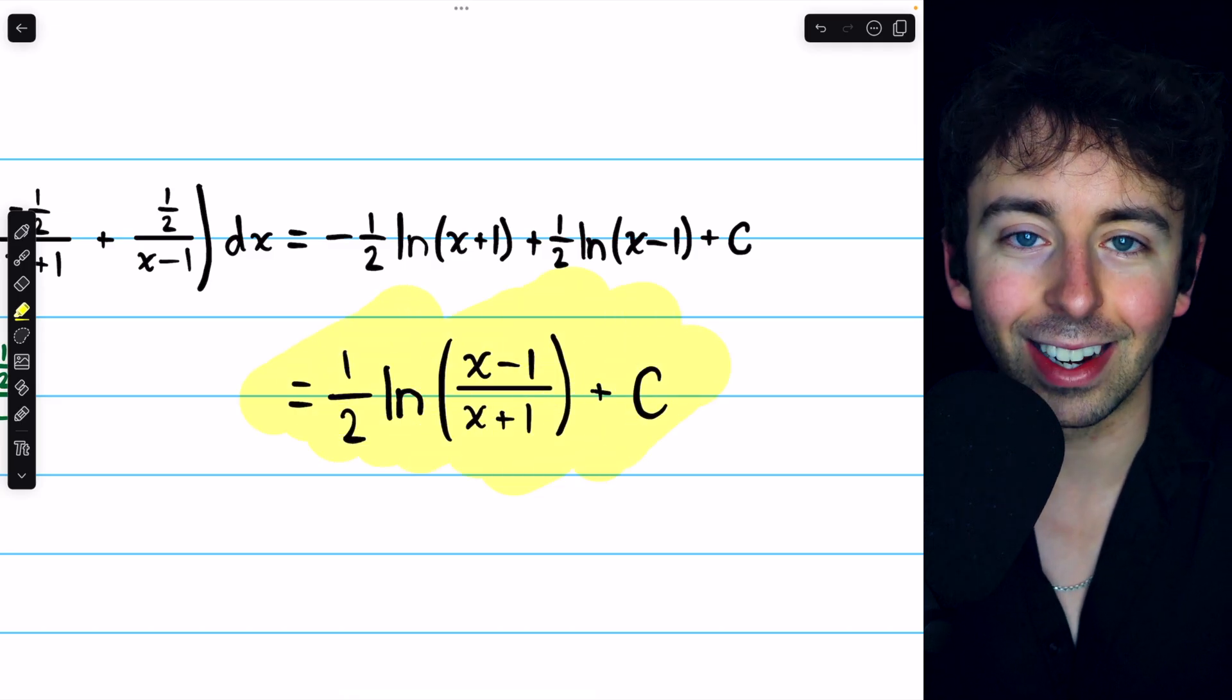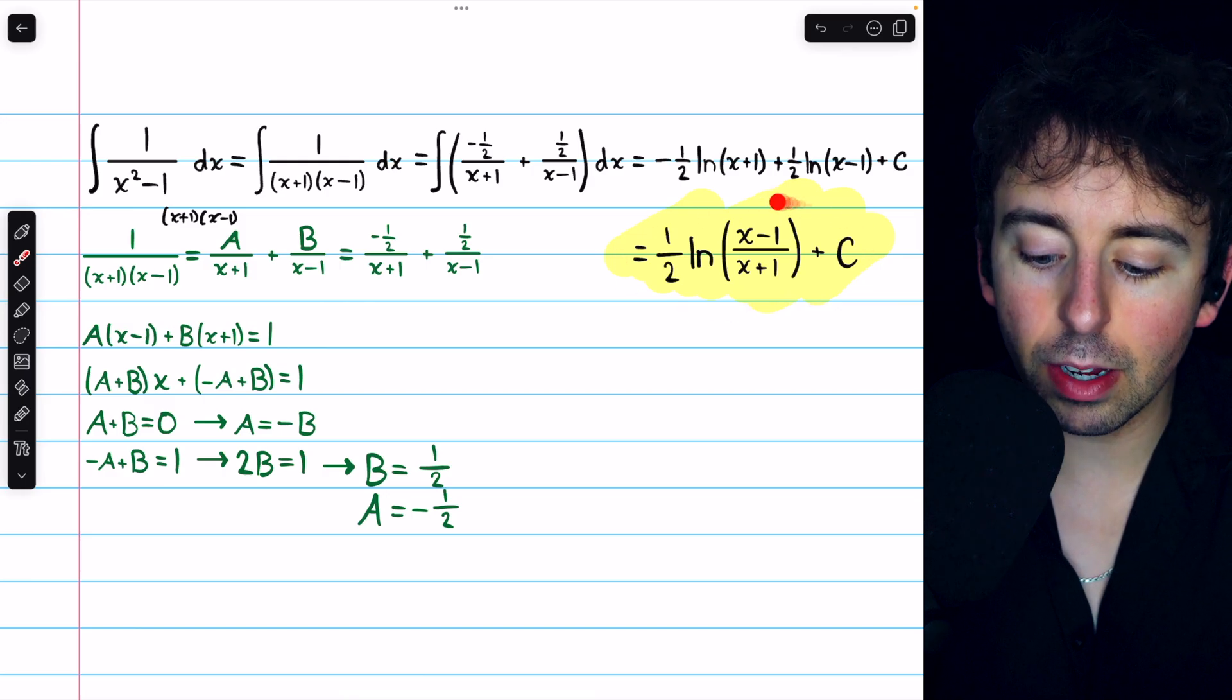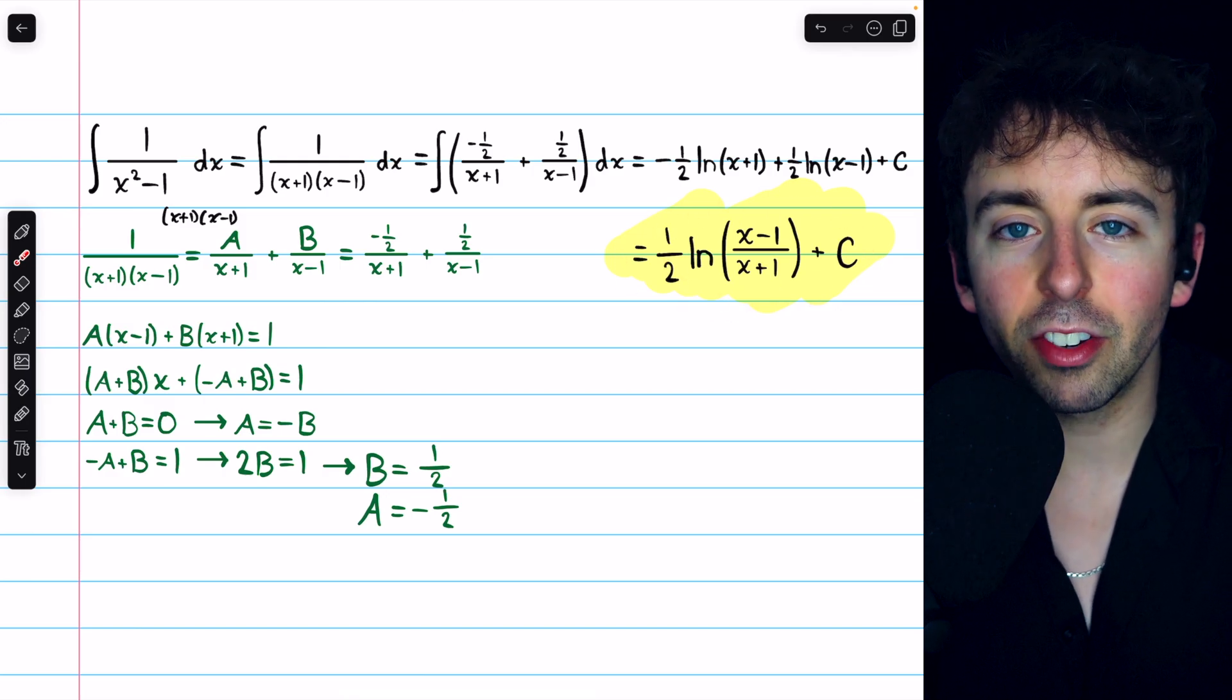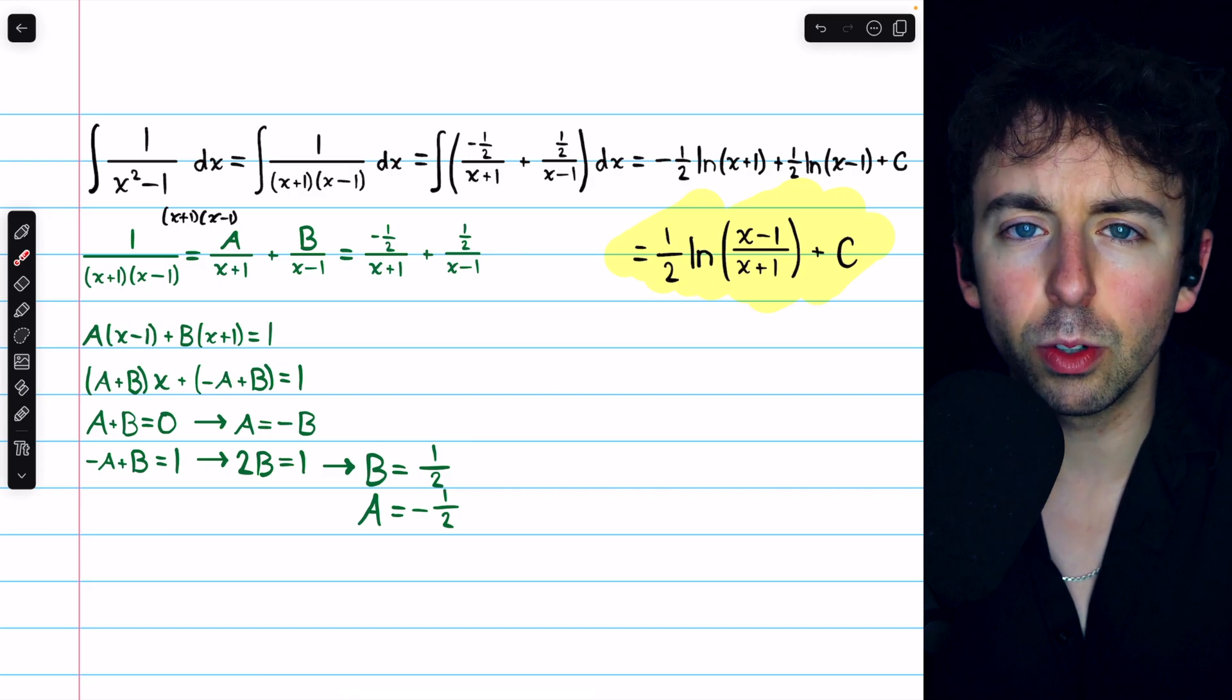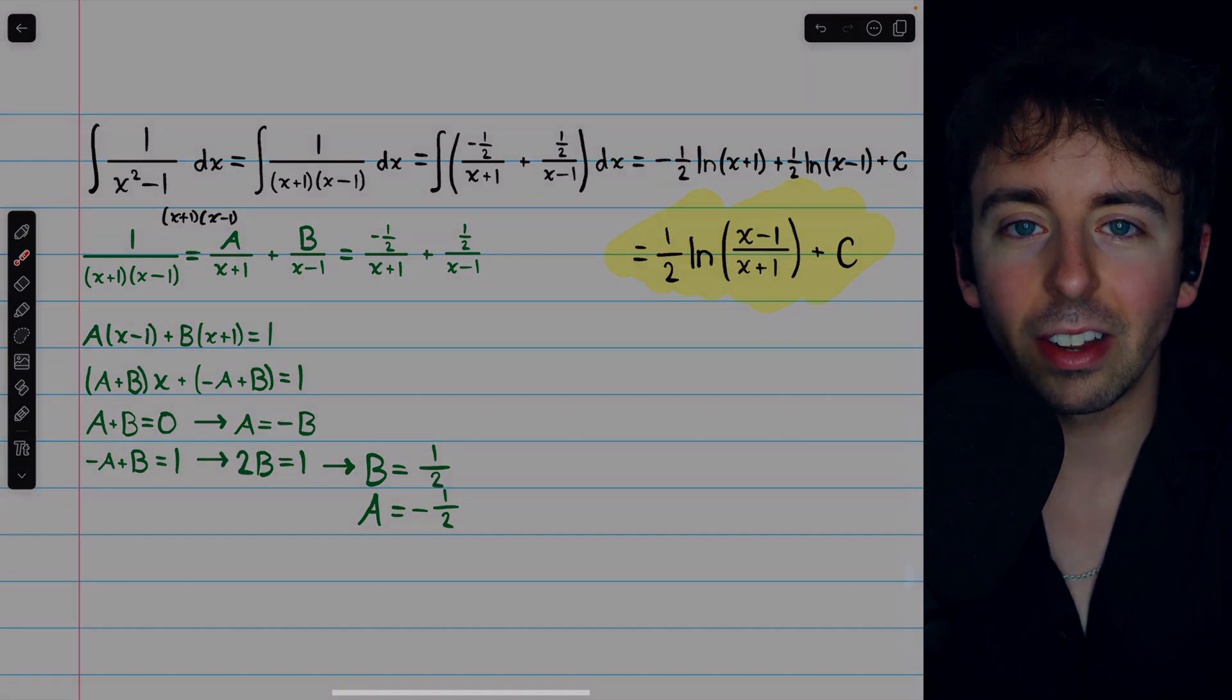That is our final answer. That's how to integrate one over x squared minus one using partial fraction decomposition. Let me know in the comments if you have any questions, and be sure to check out my Calculus 2 course and Calculus 2 exercises playlists in the description for more. Thanks for watching.